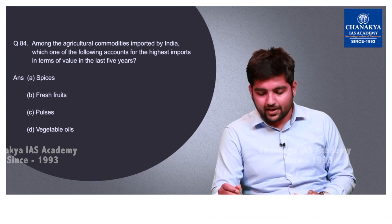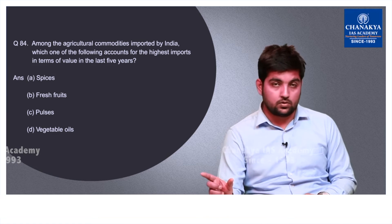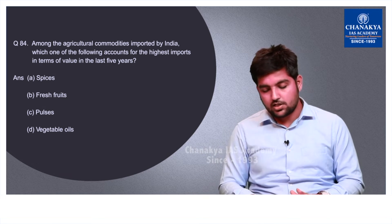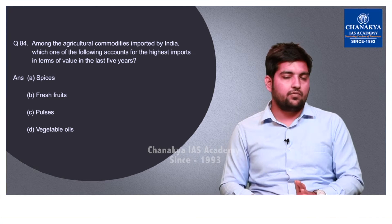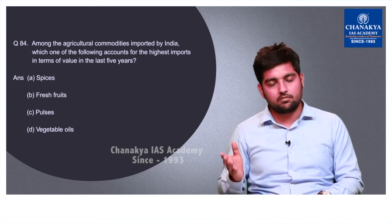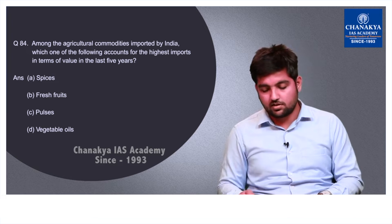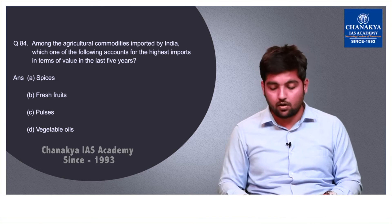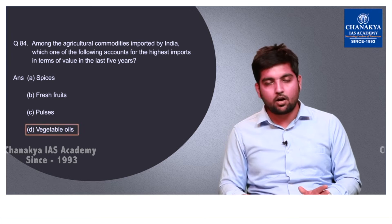Question number 84 asks which agricultural commodity imported by India accounts for the highest imports in terms of value in the last 5 years. The keyword here is 'value.' Spices, fresh fruits and pulses are less valuable than oil. India imports around 70 percent of its vegetable oil demands, and the government has been considering this rising import cost. The correct option is D — vegetable oils.